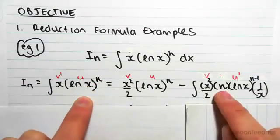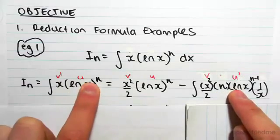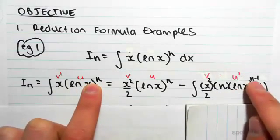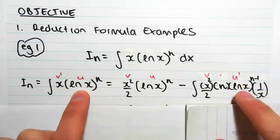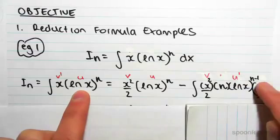we pop the n down the front, so we get n(ln x)^(n-1), we have to subtract 1 from that n, so it's to the power of n minus 1, and then we have to differentiate what's inside the bracket. So ln x, when you differentiate that, you get 1/x.